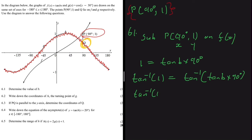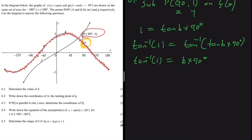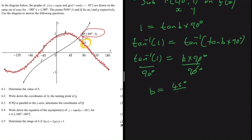This simplifies to tan⁻¹(1) = b × 90°. Dividing both sides by 90°: b = tan⁻¹(1) ÷ 90° = 45° ÷ 90° = 1/2. So the value of b is one half.